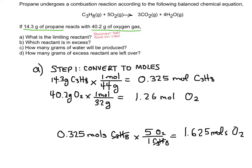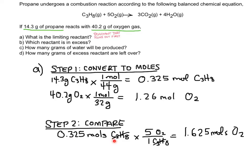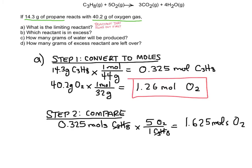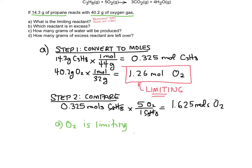Step two is to compare the two quantities. If I want to use all of this propane, I need five times as much oxygen, which would be 1.625 moles of oxygen. I can see I do not have enough — I only have 1.26 moles. So the limiting reactant, the one I will run out of, is oxygen. For part A, O2 is limiting. For part B, propane must be in excess, meaning we have enough to go around.